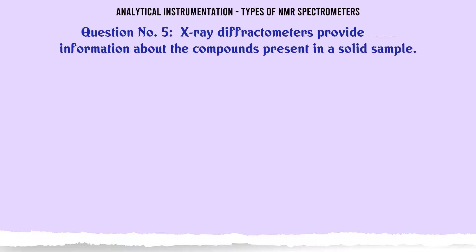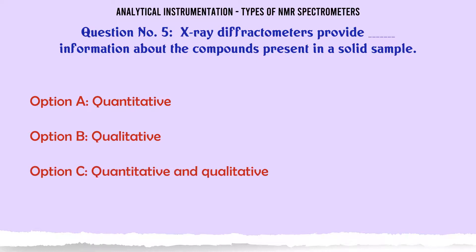X-ray diffractometers provide information about the compounds present in a solid sample. A. Quantitative. B. Qualitative. C. Quantitative and Qualitative. D. Either Quantitative or Qualitative. The correct answer is